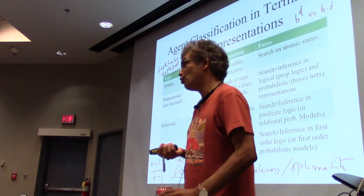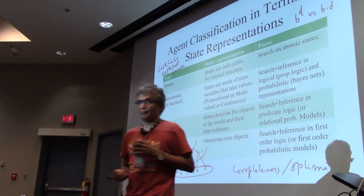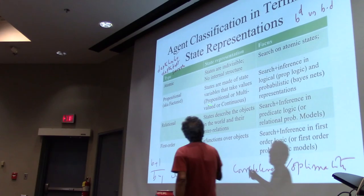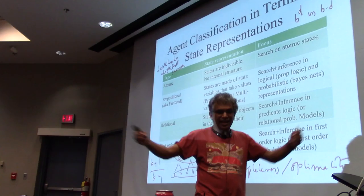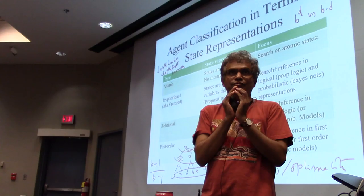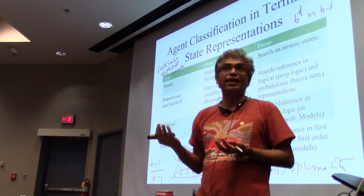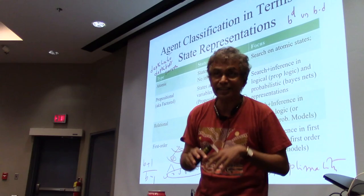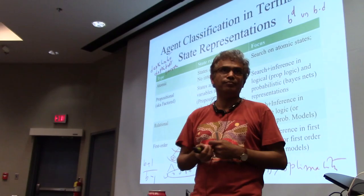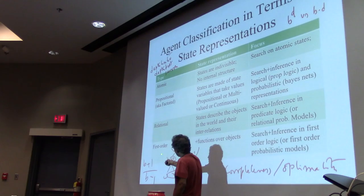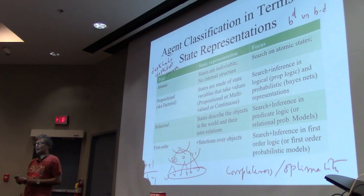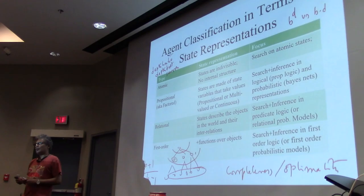When we get to propositional or factored representations, states are no longer indivisible — they have features. For example, I can describe the state of this table as: my pointer is on top of my soda can. That's a particular feature of the state. I am providing structure by describing the state in terms of state variables. With propositional logic — like Boolean algebra — if you have n propositions each true or false, you can distinguish 2^n different configurations of the world. Rather than talk about 2^n states explicitly, you talk about n state variables. That's compactness.